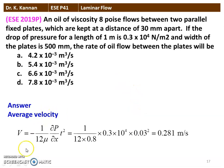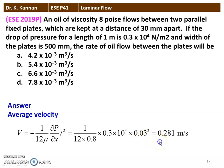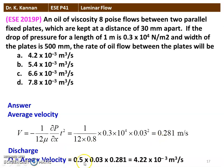We calculate the average velocity: V = (1/12μ)(∂p/∂x)t². With μ = 0.8 N·s/m², ∂p/∂x = 0.3 × 10⁴, and t = 0.03 m, this gives V = 0.281 m/s. The discharge Q = area × velocity = 0.5 × 0.03 × 0.281 = 4.22 × 10⁻³ m³/s. So option A, 4.2 × 10⁻³ m³/s, is the correct answer.